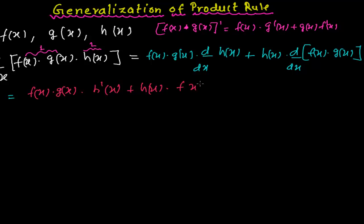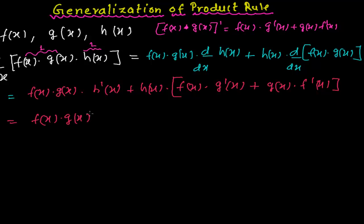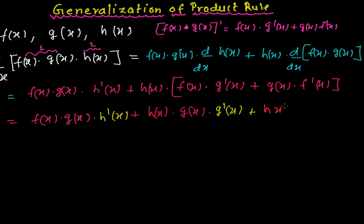So now: f(x)·g(x) times the derivative of h(x) will be h'(x). And again, h(x) times the derivative of f(x)·g(x) — that will be the first function times the derivative of the second, plus the second function times the derivative of the first, f'(x). So it becomes: f(x)·g(x)·h'(x), plus h(x)·g(x)·g'(x) — wait, let me correct — plus h(x)·f(x)·g'(x), plus h(x)·g(x)·f'(x). This is exactly the formula for the derivative of the product of three functions.